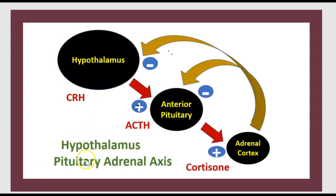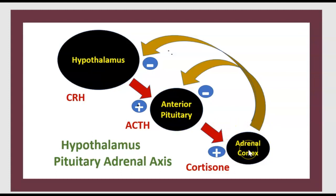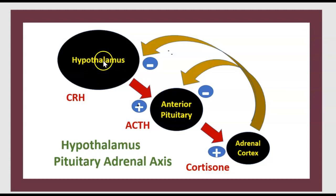The hypothalamus-pituitary-adrenal axis is made of three glands: the hypothalamus, the anterior pituitary, and the adrenal cortex. The stimulation of the anterior pituitary from the hypothalamus comes from CRH. The stimulation of the adrenal cortex from the anterior pituitary comes from ACTH.